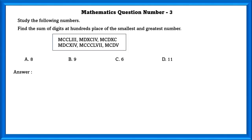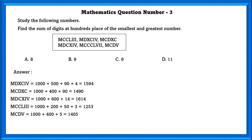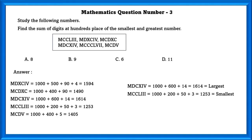Mathematics question number 3. Study the following numbers. Find the sum of digits at the hundreds place of the smallest and greatest number. The largest number is 1614 and the smallest number is 1253.